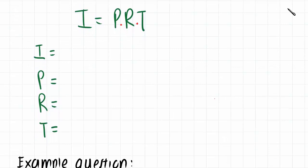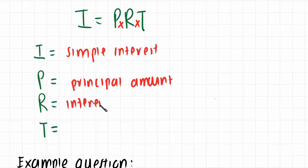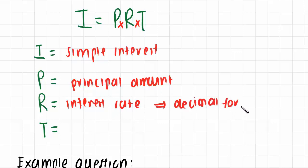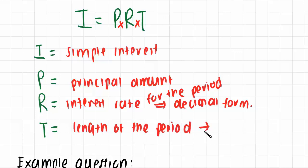To determine the interest earned, we use the formula I = PRT, where I is the simple interest, P is the principal amount, R is the interest rate — always expressed in decimal form — and T is the length of the period, usually given as a decimal or fraction.